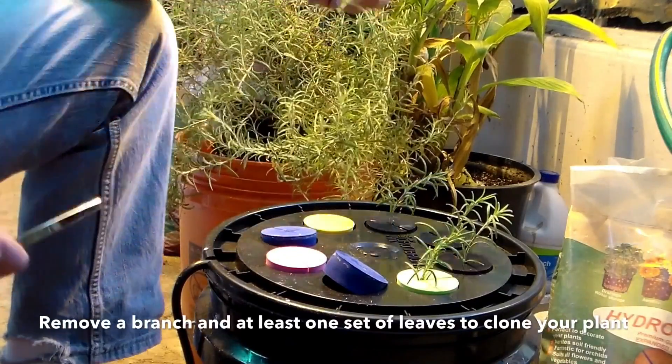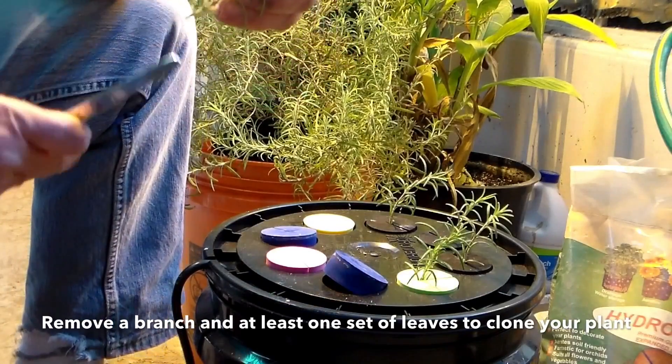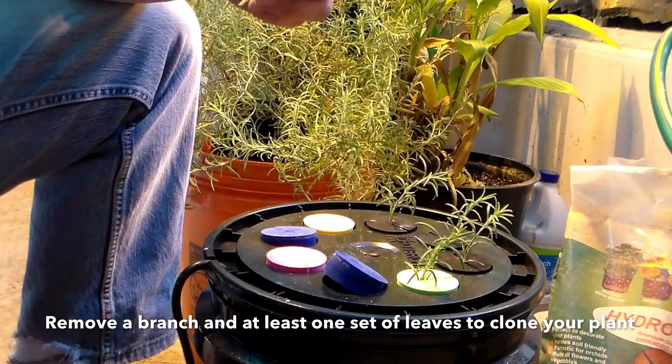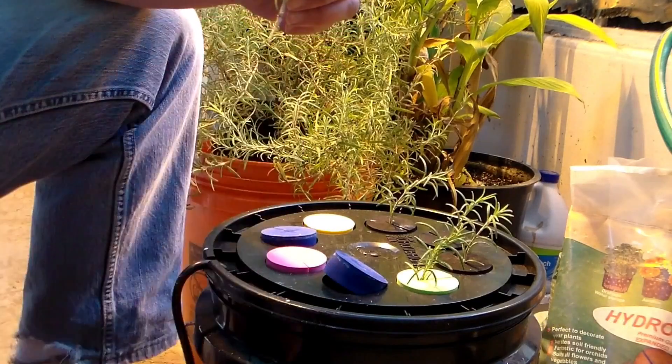You're going to cut it off right below the node and then you want to cut or rip off with the scalpel or scissors some leaves down here because the new roots are going to grow out of where the leaves were.